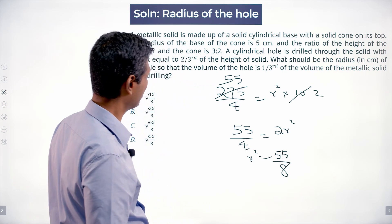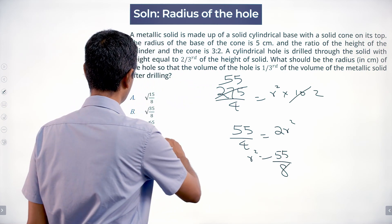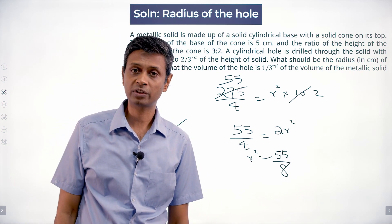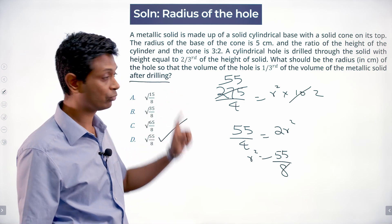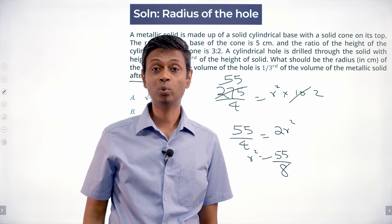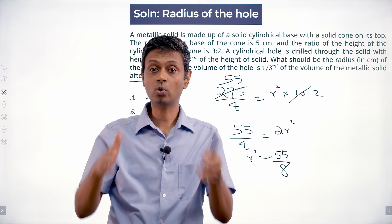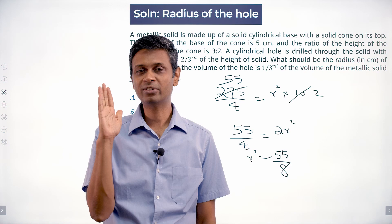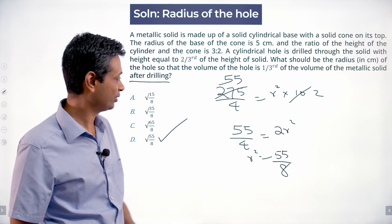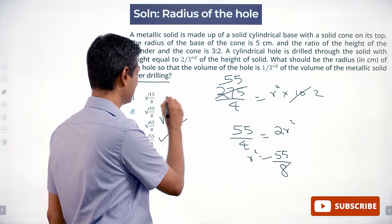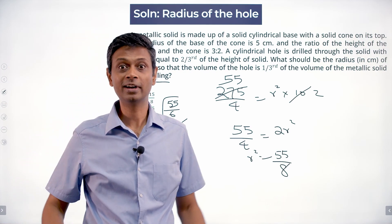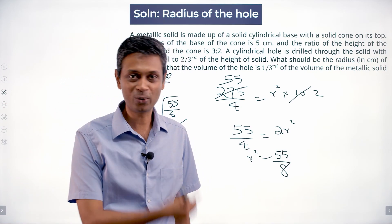So r = √(55/8). We needed to find the radius, and the answer is the square root of 55 over 8. What I had missed earlier was the phrase 'after drilling' — I was plugging in one-third of the total volume instead of one-fourth, which gave me √(55/6). I was super annoyed with myself. Luckily, I caught the error before finalizing.